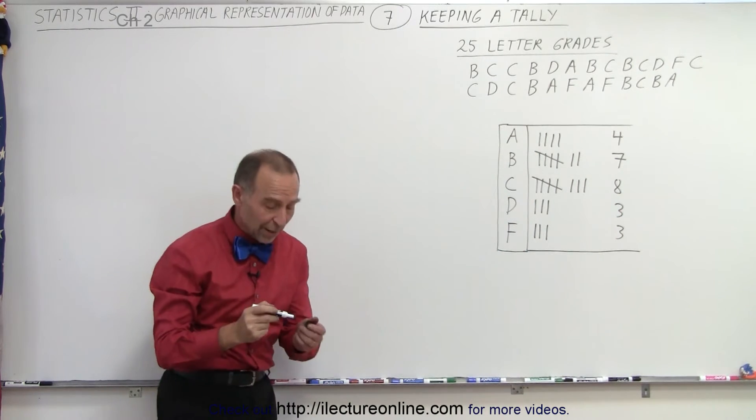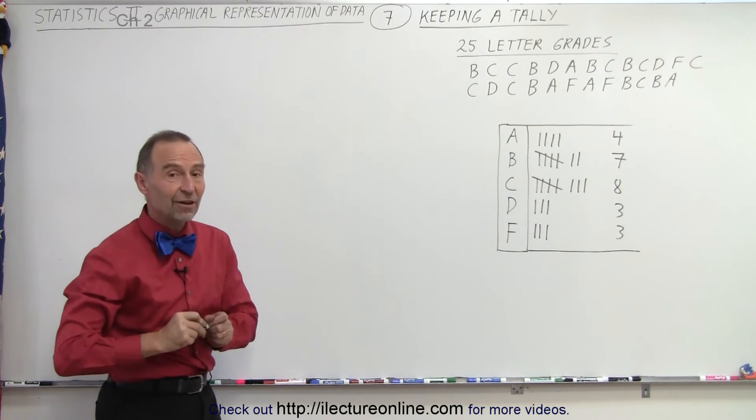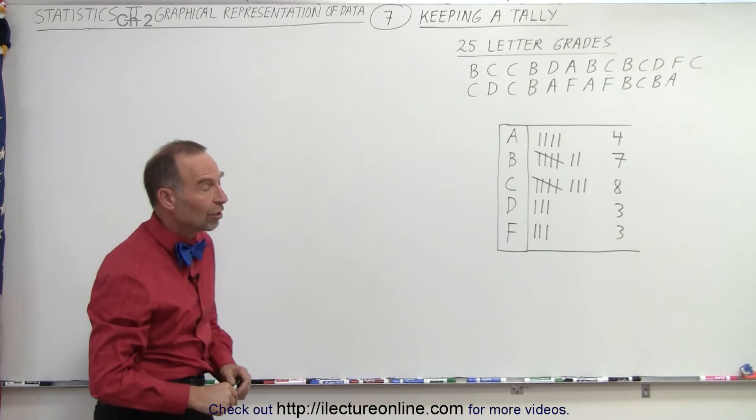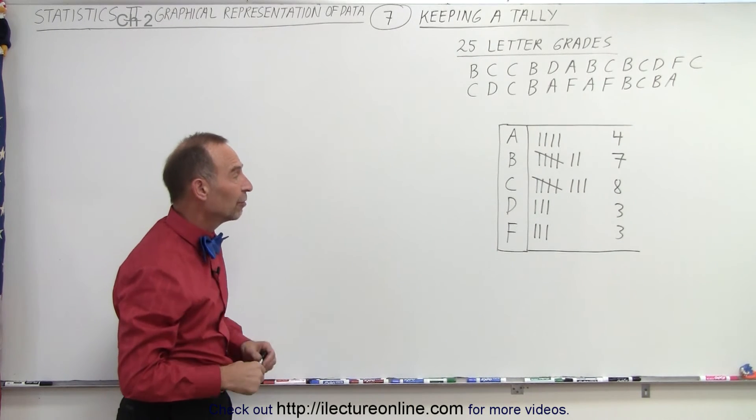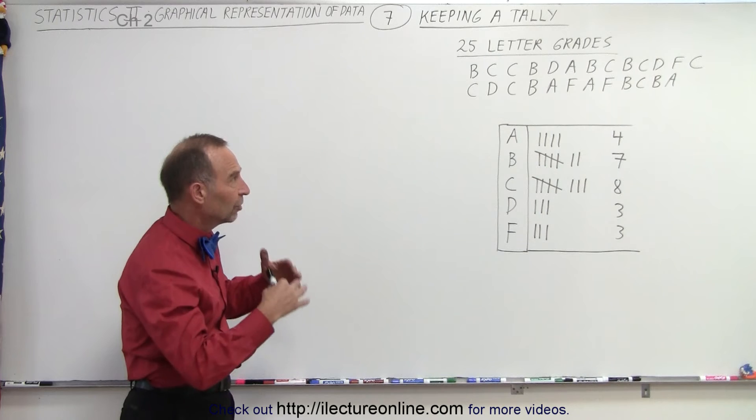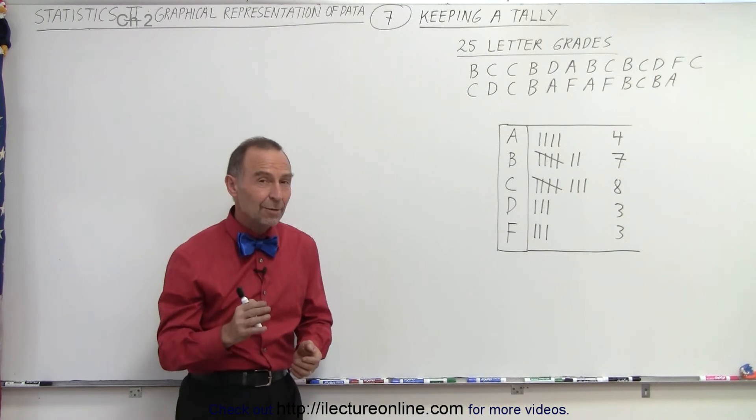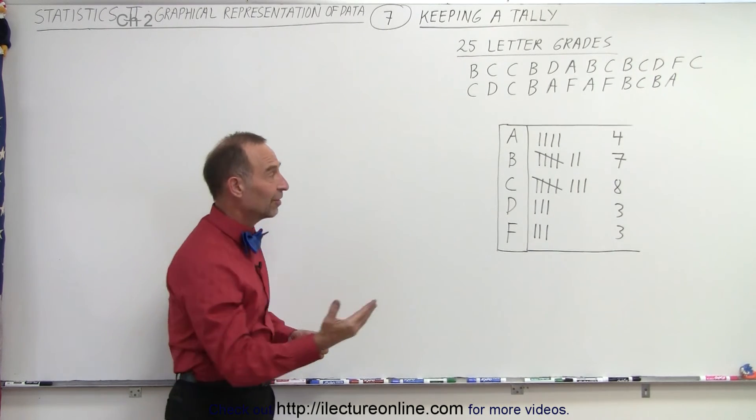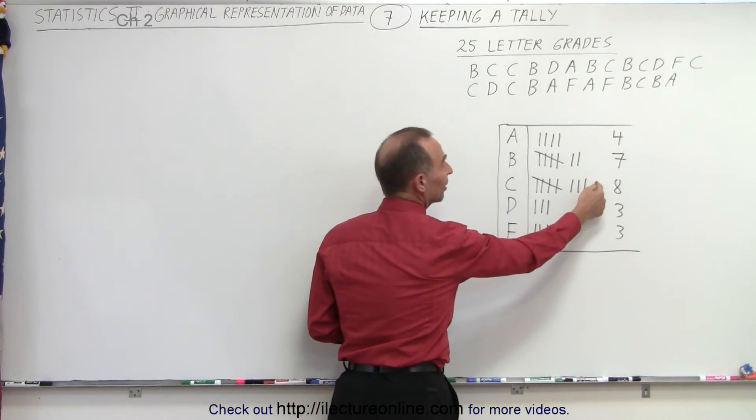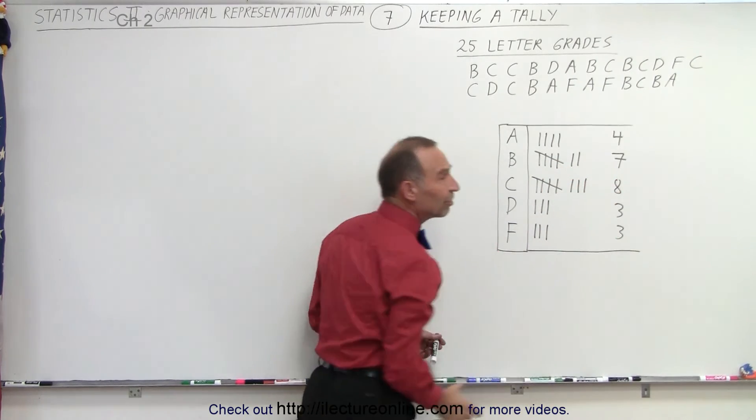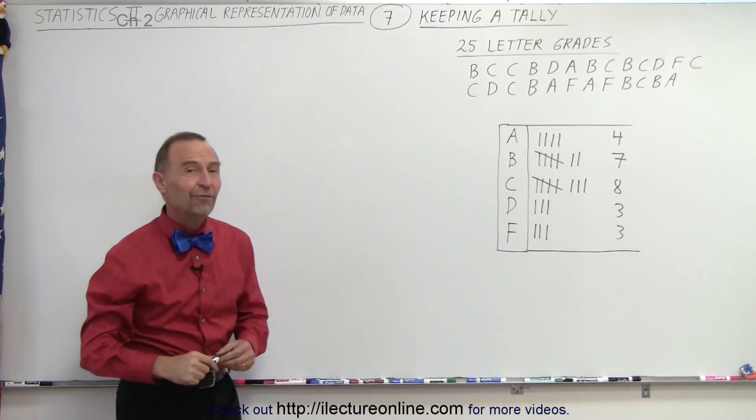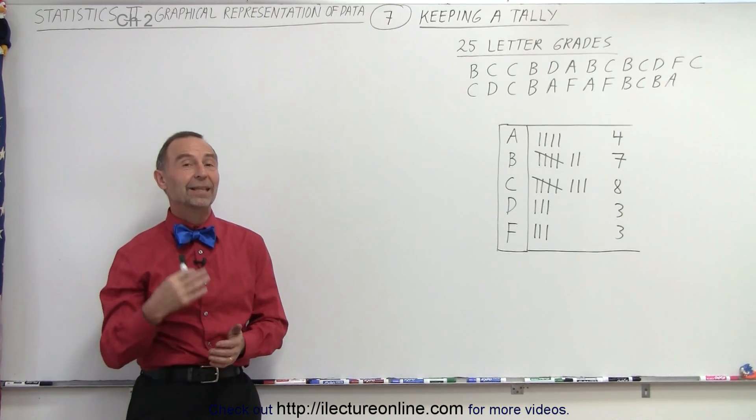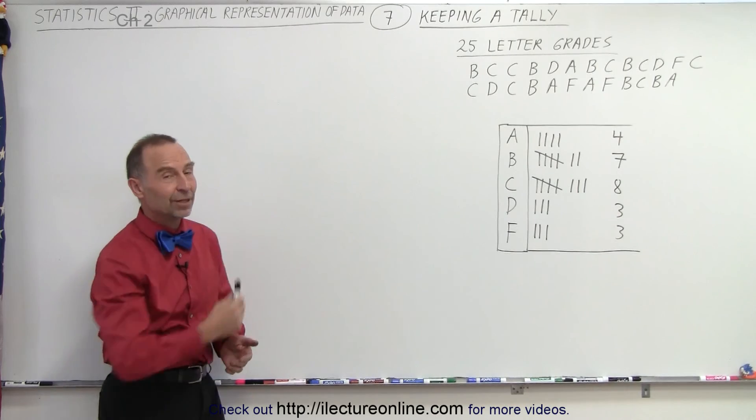And see, that is what we mean by keeping a tally. It's a very quick, effective method to take a group of data and see what your distribution is, your frequency distribution relative to the data set that we started with. So it's a handy method, a clever method, and a very quick method. Notice that every time you get to the fifth of an item, then you simply draw a line across. You can very easily just add up the groupings of fives to see how many total data points you have of that particular type. And that is what's meant by keeping a tally.